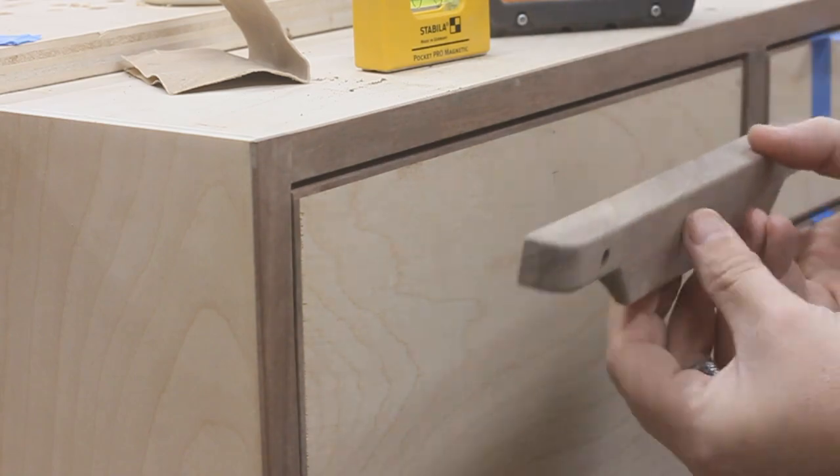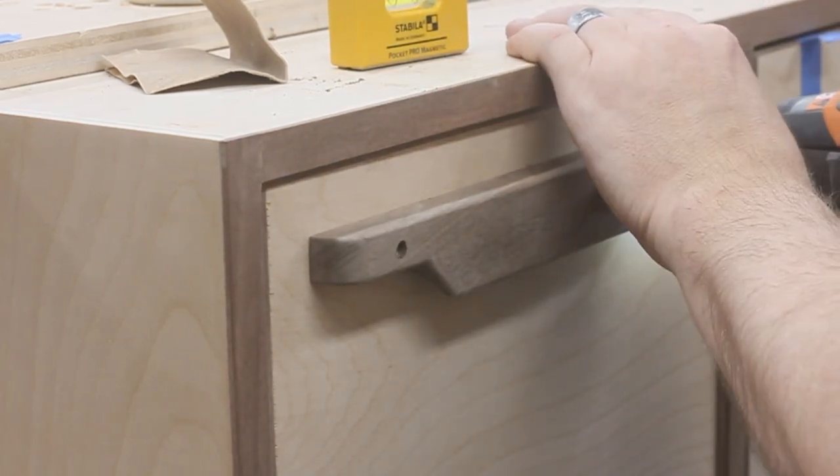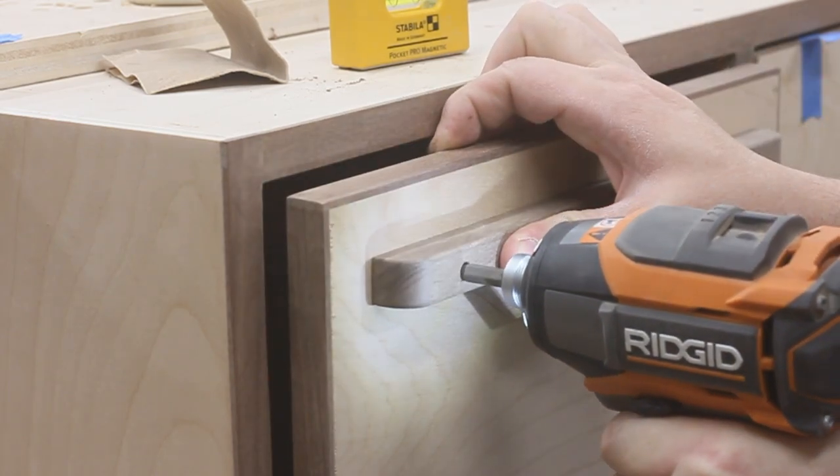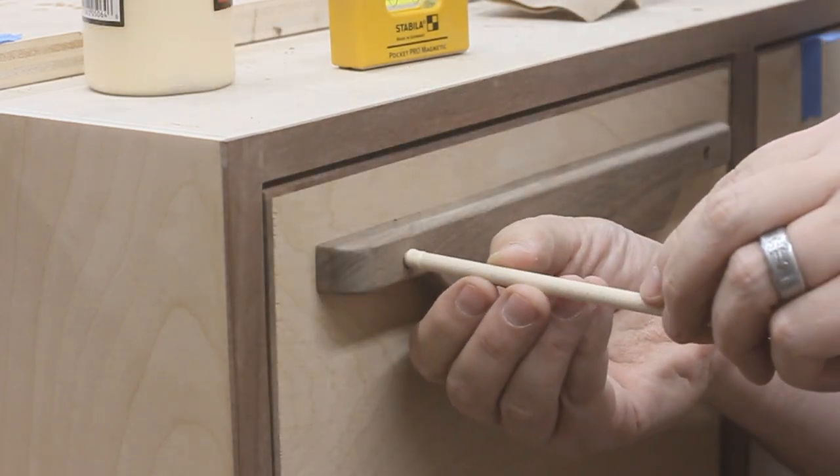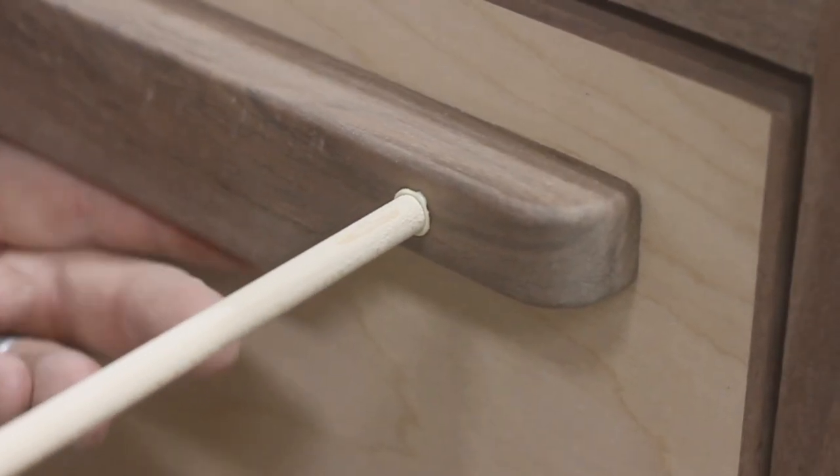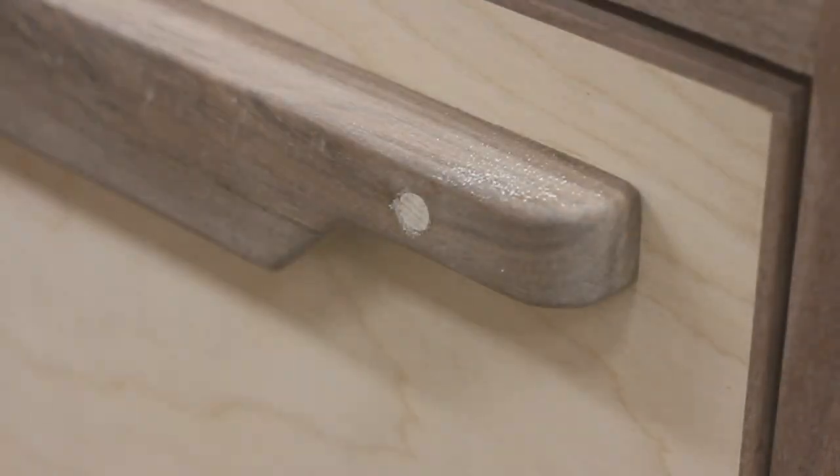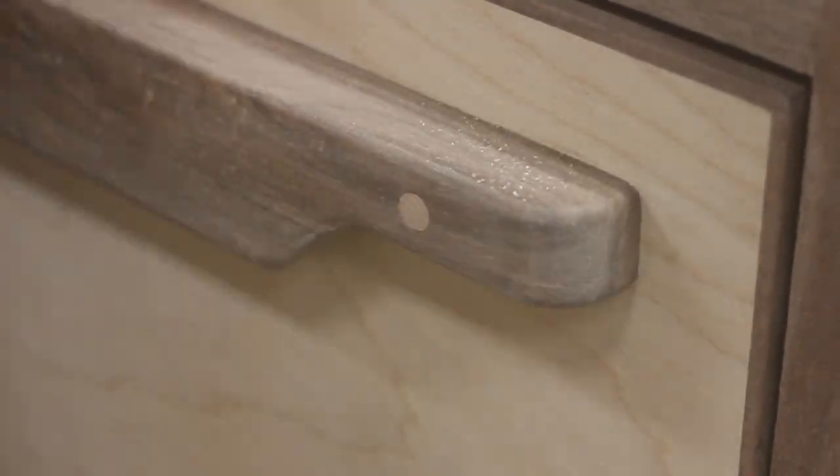Then I could just center each one onto the face of the drawer, drive in the two mounting screws through the holes, and then plug those holes with a maple dowel. This high contrasting accent is the same one that I used when I made the bench, and I really think it ties these two pieces together. A little bit of sanding, and they're done.